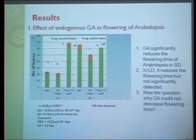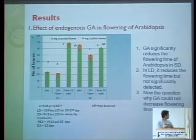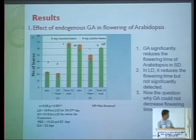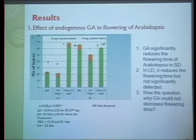The first result is the effect of endogenous GA on flowering. On the y-axis is number of leaves and on the x-axis are different treatments under long day and short day: DDW control, GA, and Paclobutrazol. Plants flower with about 22–25 leaves in the control. Adding GA has almost no effect in long day. But applying Paclobutrazol causes very late flowering in long day. However, Paclobutrazol has no significant effect on short day, while GA does have a significant effect in short day. So Paclobutrazol works in long day and GA works in short day.